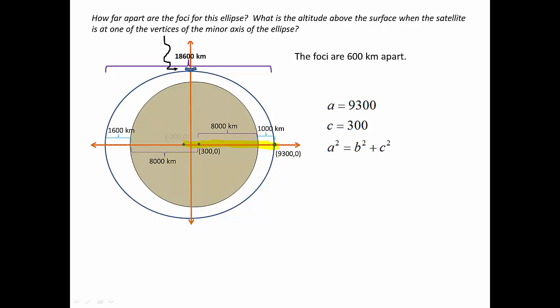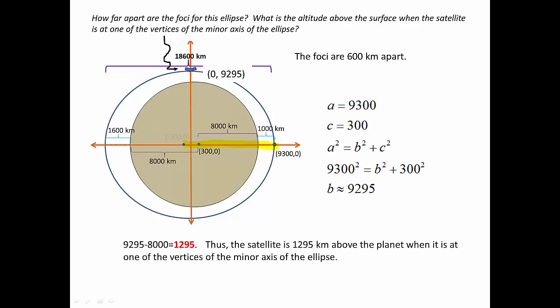We know that C, where the focus is, is 300. We also know the relationship between A, B, and C, and that allows us to figure out what B is. B is about 9,295. So that point right up there is 9,295, and the radius of the planet is 8,000.